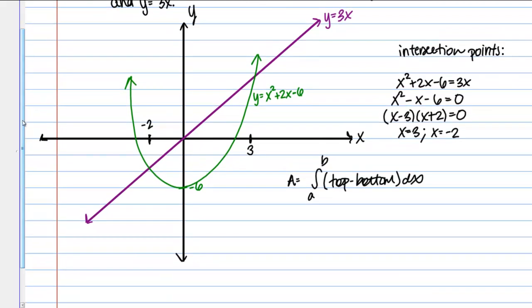So then let's plug in our relevant information. We know our interval should be from negative 2 to 3. Our top function is 3X. Our bottom function is X squared plus 2X minus 6. You want to make sure to put that in parentheses so you remember to distribute the minus sign to all terms.